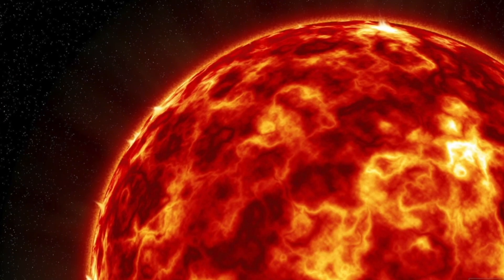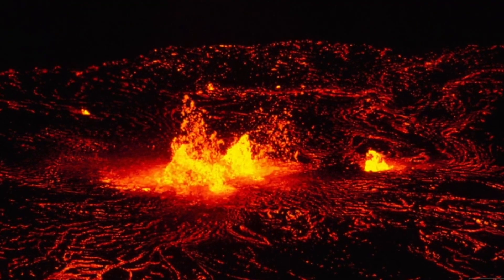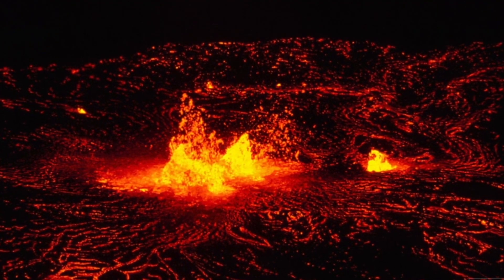Tres-2b orbits a star some 750 light-years away in the direction of the constellation Draco and is the darkest planet or moon ever discovered. It's darker than the blackest lump of coal, than dark acrylic paint you might paint with.